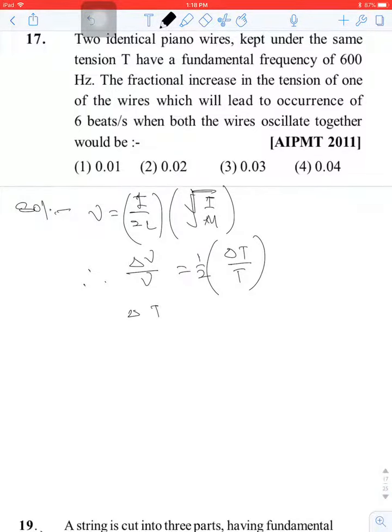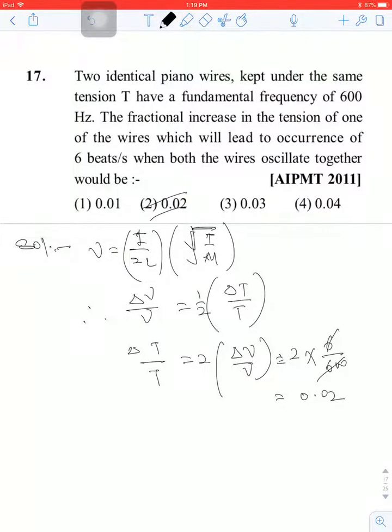Del T upon T equals into del ν, so two del ν upon ν will be six upon six hundred, which is one by ten or zero point zero two. The second option is correct.